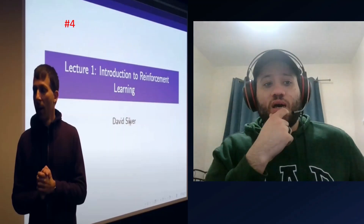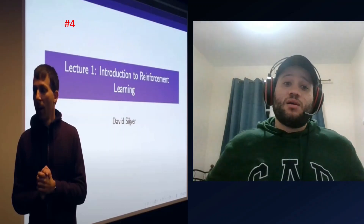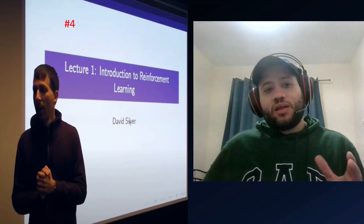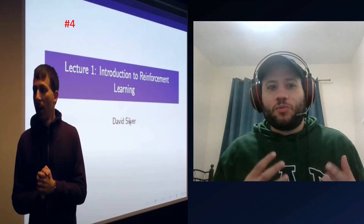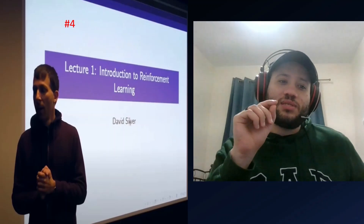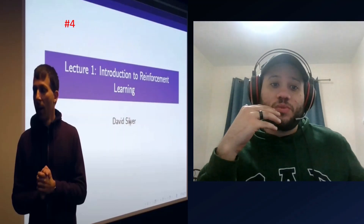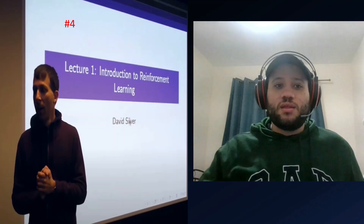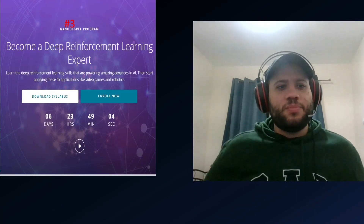At number four we have the David Silver course on YouTube. This is a free course and David Silver is one of the best people in the reinforcement learning space — by far one of the best people to be teaching this. However, the video quality is extremely low and it's very hard to see what's going on, which is why it's rated low on this list. On the plus side, his website has a lot of coursework and material you can follow along with as if you were attending. But thanks to the quality issue it was ranked number four.